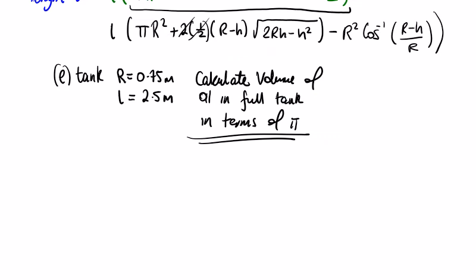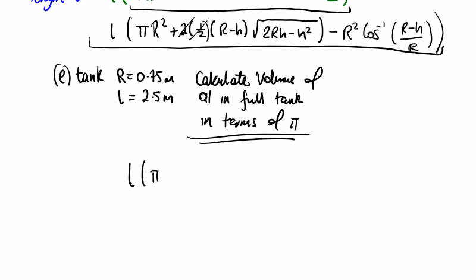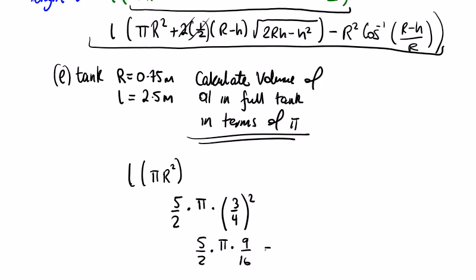The last part asks us to calculate the volume of oil in a full tank in terms of pi. The volume of a full tank is L times pi R squared. We're given length L equals 2.5, written as 5 over 2 to avoid a calculator. So we get 5 over 2 times pi times (3/4) squared — which is 5 over 2 times pi times 9 over 16 — which equals 45 pi over 32. Good luck practicing this question.